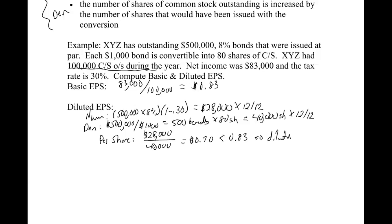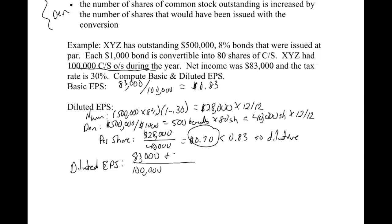Since the per share effect of $0.70 is less than basic EPS, it has a dilutive effect. To calculate diluted earnings per share, we start with basic: $83,000 over 100,000 shares. We then add in our numerator and denominator effects from the bonds. That works out to $0.81 per share, which is clearly less than basic EPS. That is our diluted earnings per share answer, assuming this is our only dilutive security.